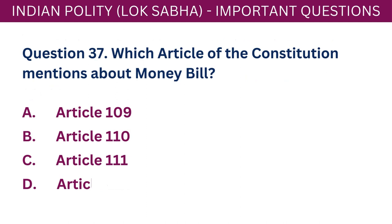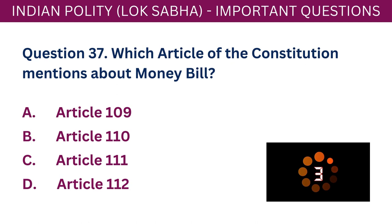Question 37: Which article of the Constitution mentions about money bill? A. Article 109. B. Article 110. C. Article 111. D. Article 112. The correct answer is B - Article 110.